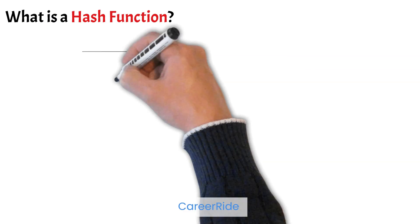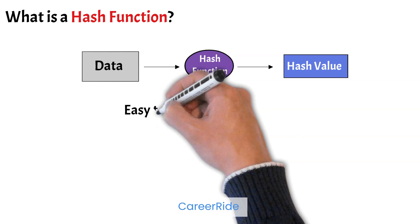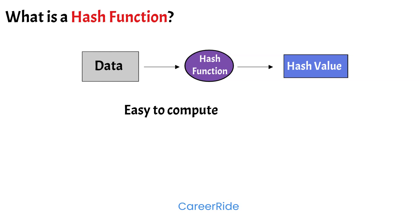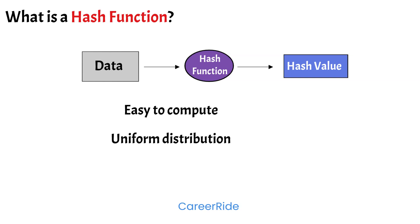What is a hash function? A hash function is a function that takes data of arbitrary size and returns a value of fixed size, which is known as the hash value. Choosing a good hash function is very important to create an efficient hash table. A good hash function must have the following basic requirements: First, easy to compute — a hash function must be easy and require less system resources to compute. Next, uniform distribution — a hash function must provide a uniform distribution across the hash table and avoid clustering. Next, less collisions — collisions occur when two different data generate the same hash value, and a good hash function must have very few collisions. Next, one way — the original data must not be retrievable from the hash value, therefore a hash function must always work one way.